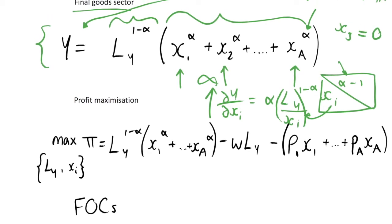And so a firm in the final goods sector is going to have its profit maximization problem given this, where it can maximize its profits pi with respect to its labor input and its input of these intermediate goods X_i.